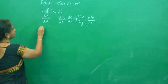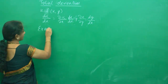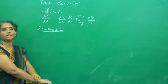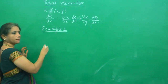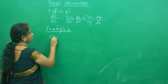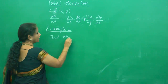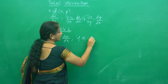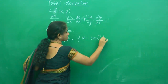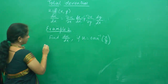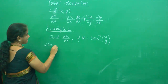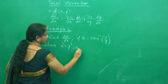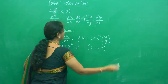We are going to do one more problem, which is again a question that appeared in the 2010 University paper. You are asked to find du by dx if u is tan inverse of x by y, and you are given x square plus y square equal to a square. This has appeared in the 2010 paper.